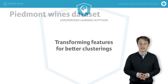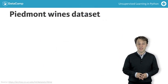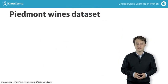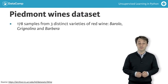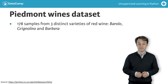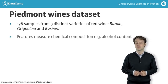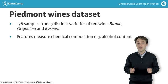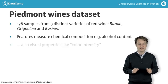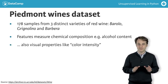Let's look now at another data set: the Petermont Wines data set. We have 178 samples of red wine from the Petermont region of Italy. The features measure chemical composition, like alcohol content, and visual properties like color intensity. The samples come from three distinct varieties of wine.